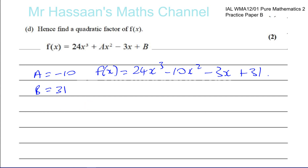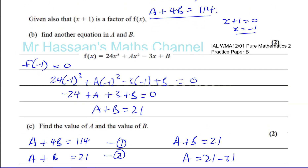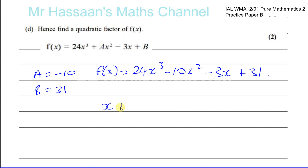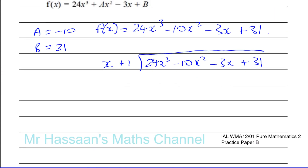Since we know x + 1 is a factor of f(x), we can divide f(x) by (x + 1) using long division. We set up: (x + 1) dividing into 24x³ − 10x² − 3x + 31. x times 24x² gives 24x³, so the first term of our quotient is 24x².